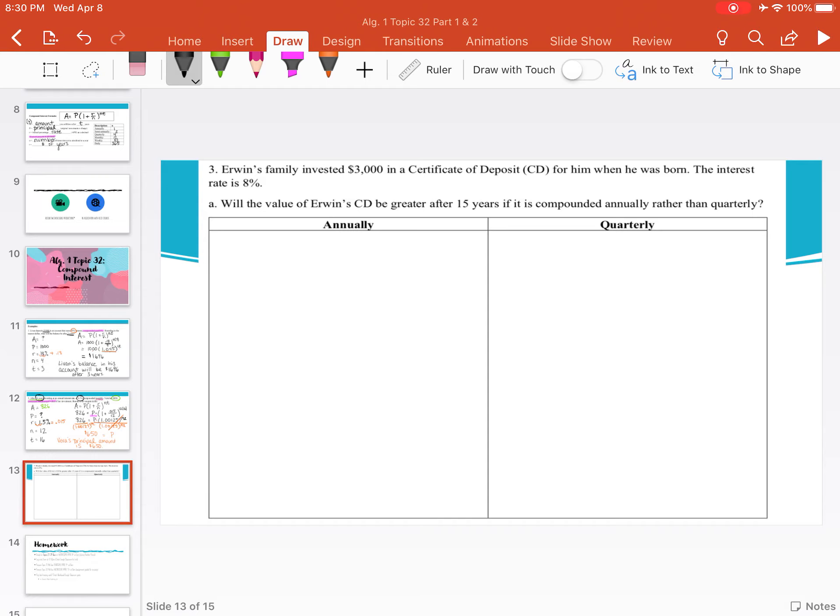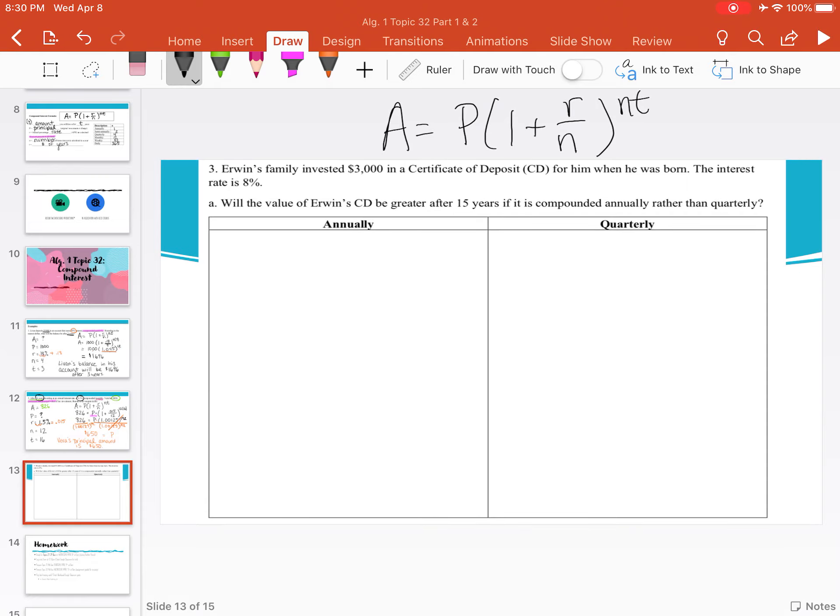We're going to start with our formula, A equals P times 1 plus r divided by n to the nt power. I'm going to label what my variables would be. We don't know the final amount for this problem. That's what we're going to need to compare. Our principal is the same for both, $3,000. The rate is 8%, which is 0.08.